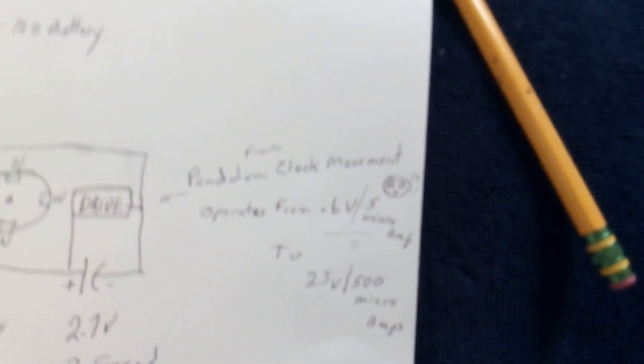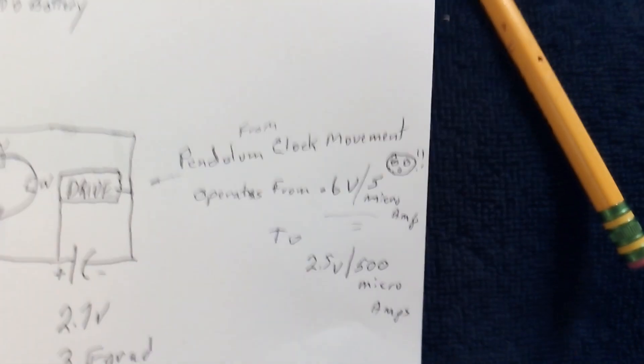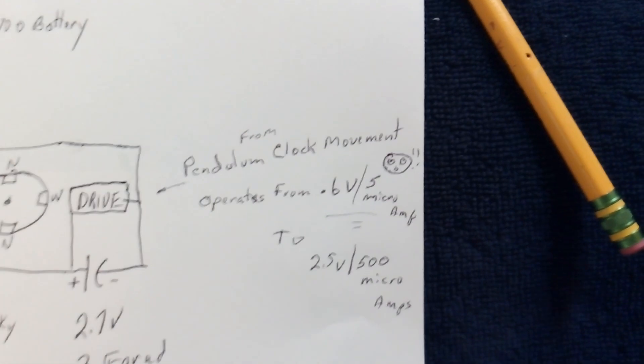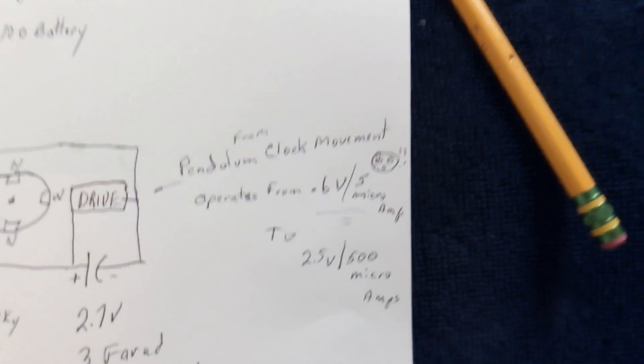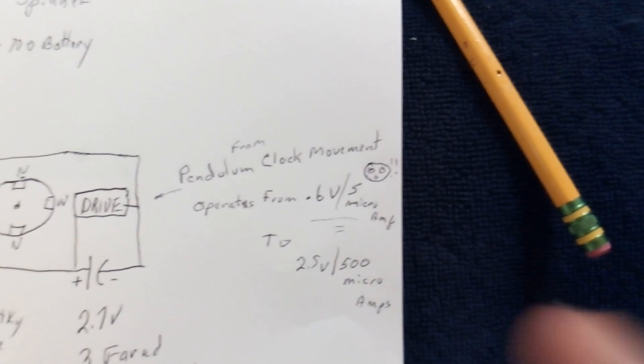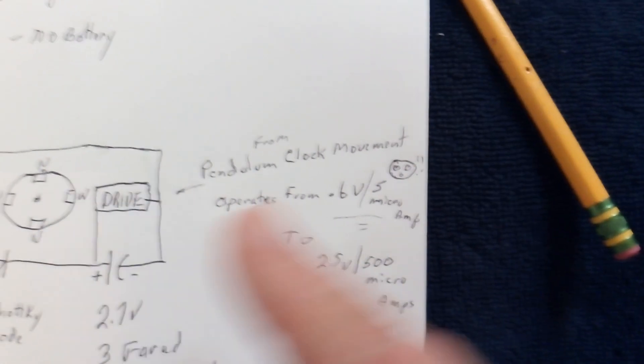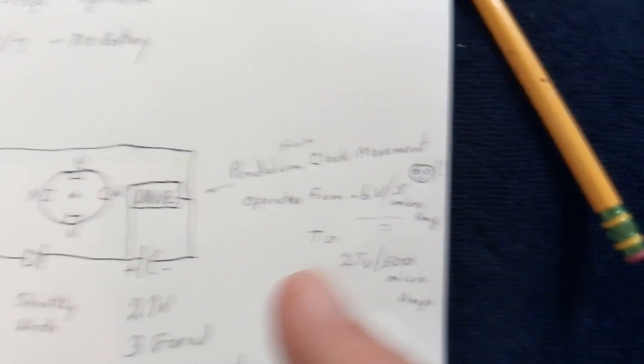You go on eBay and you put in the search bar 'pendulum clock movement' and they're about eight dollars if you shop around. They come with the whole drive for the clock and everything, and you just take the pendulum drive part out of the clock movement.